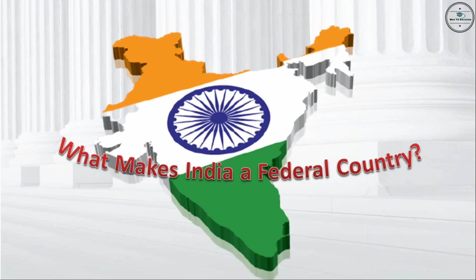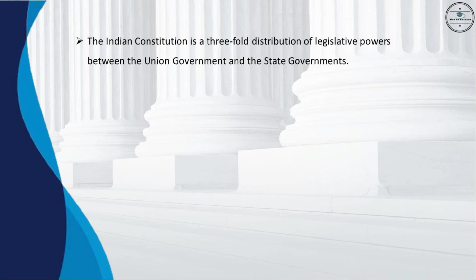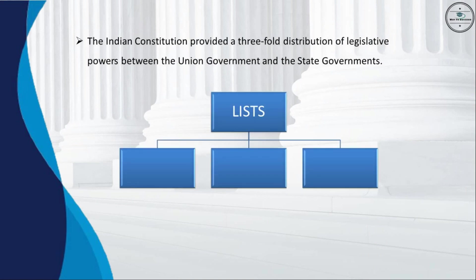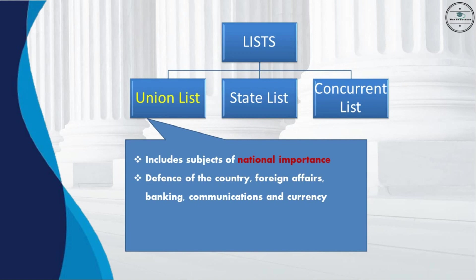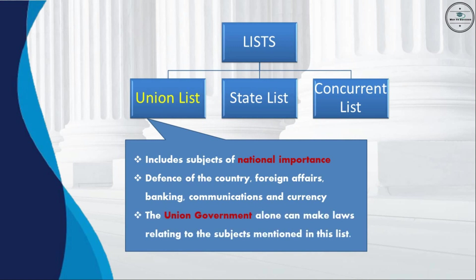What makes India a federal country? The Indian constitution provides a threefold distribution of legislative powers between the union government and the state governments through three lists: the Union List, the State List, and the Concurrent List. The Union List includes subjects of national importance such as defense, foreign affairs, banking, communications, and currency. The union government alone can make laws on subjects in this list.